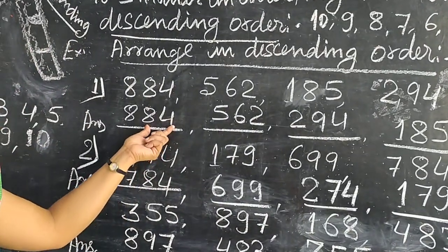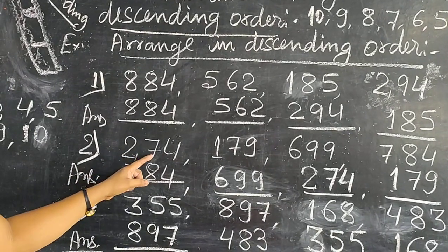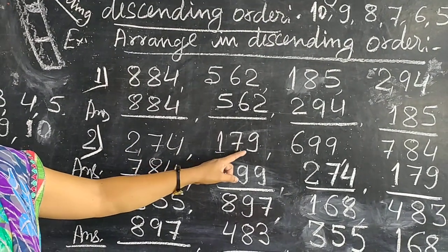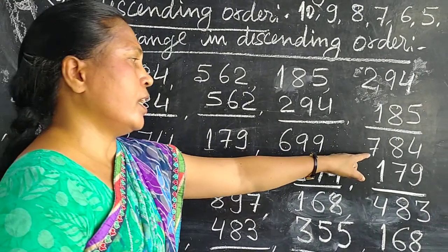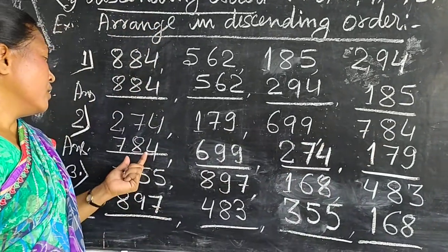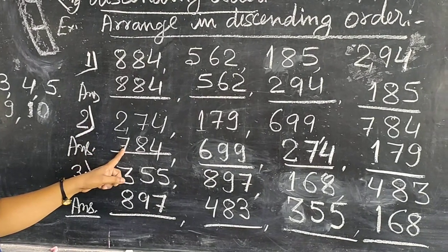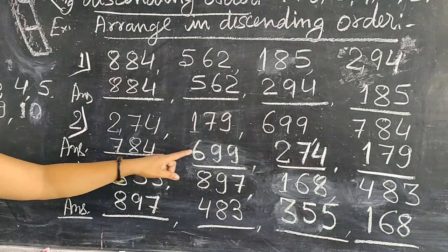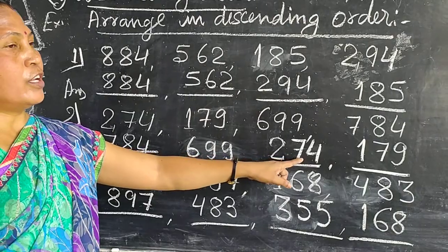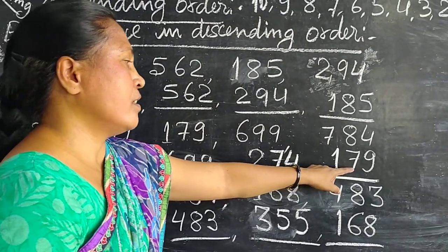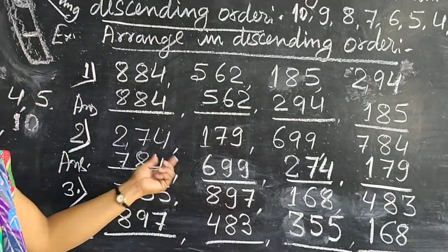Number 2: 274, 179, 699 and 784. The biggest number is 784, then 699, then 274 and 179. So this is descending order.